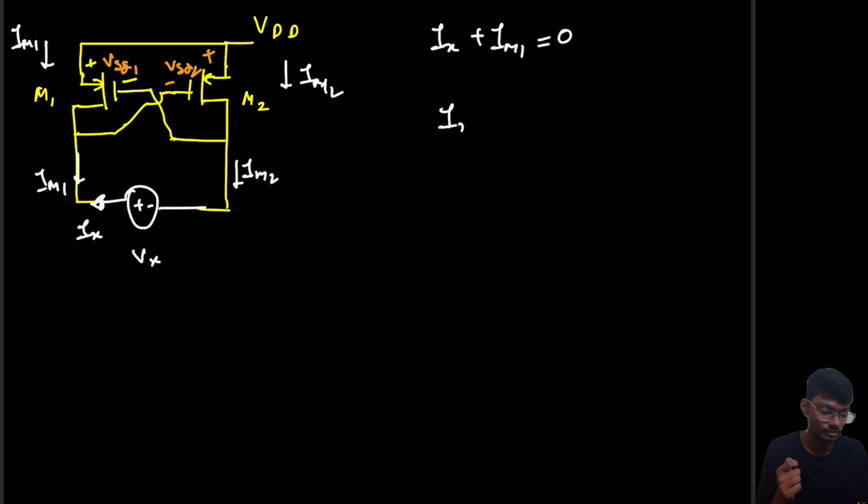For the other case, I_x equals to I_M2, because whatever current is going out, the same current should come in for the KCL equation.